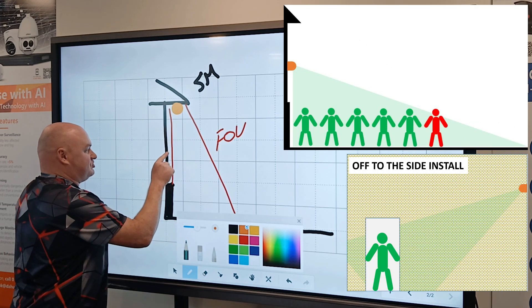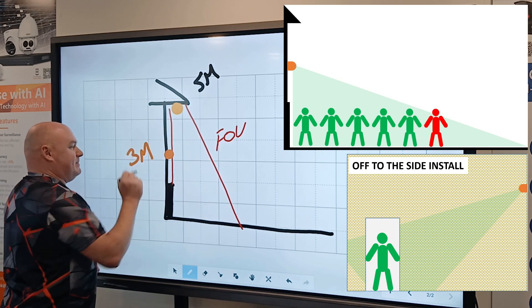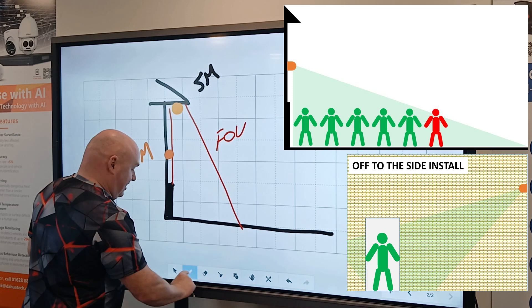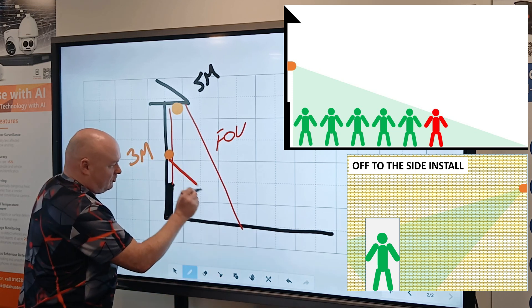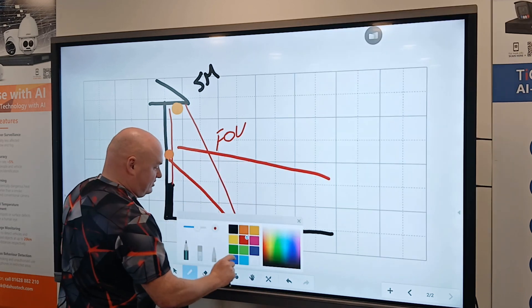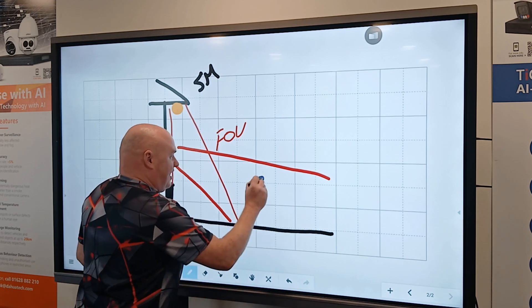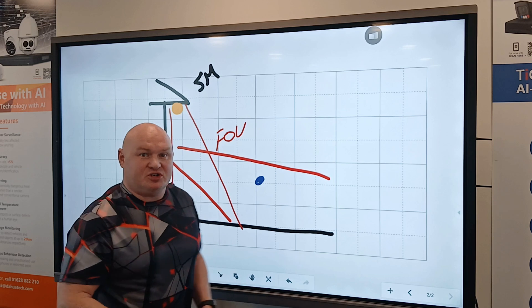What we need to do is take that camera and install it around about here, so that's going to be three meters in height. Then our field of view will be looking down and out, so that way we do in fact have a horizontal walking, talking, looking like a person structure.